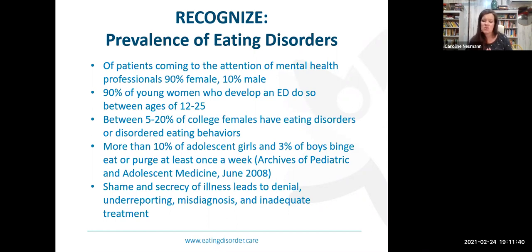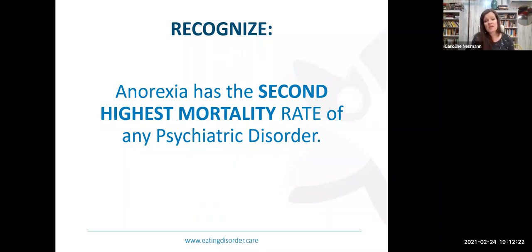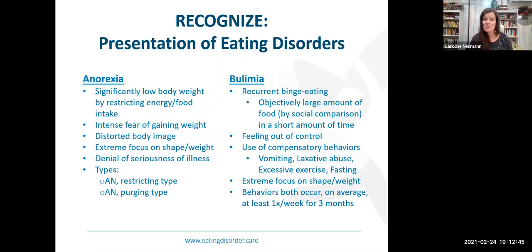The main age at which we see eating disorder symptomatology present is 12 to 25 — that is when the eating disorder really starts to take root. A sobering statistic: anorexia nervosa has the second highest mortality rate of any psychiatric disorder. It used to be the highest until our opioid epidemic. Regardless, eating disorders are very, very serious — and I don't think I fully realized the weight of that statistic before I got into this specialty.